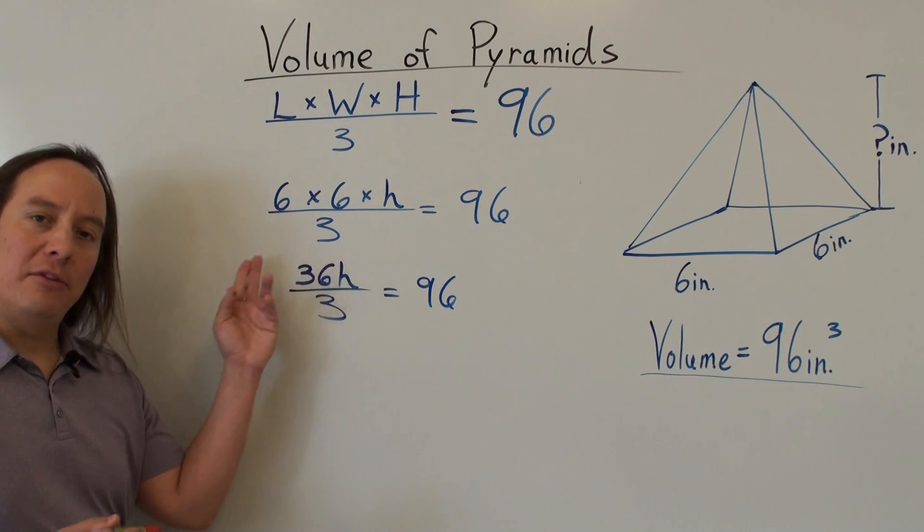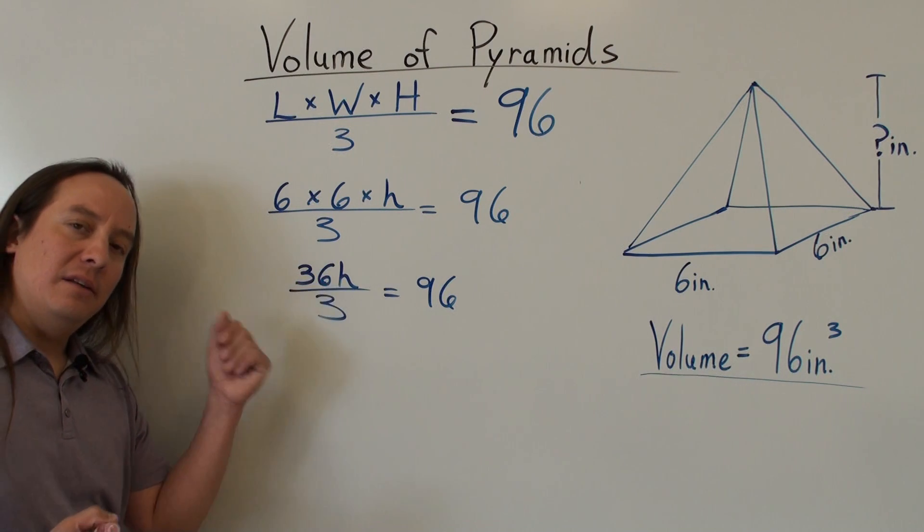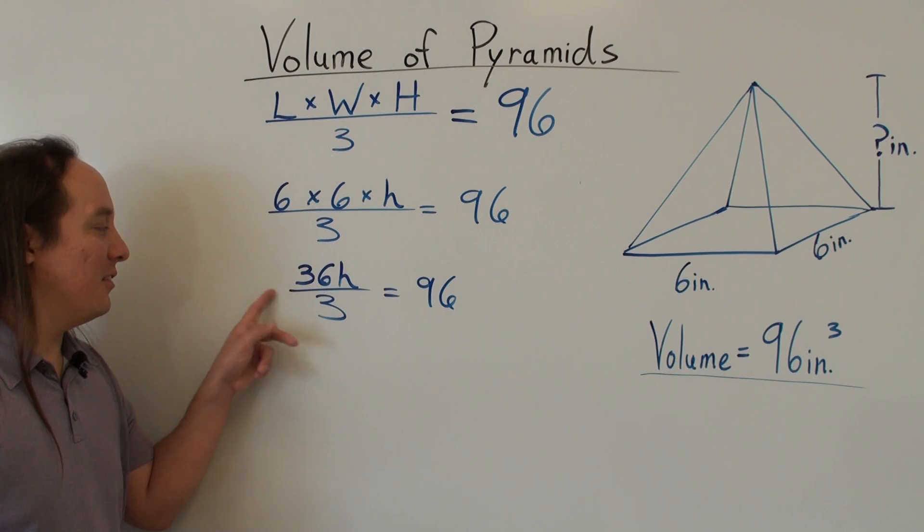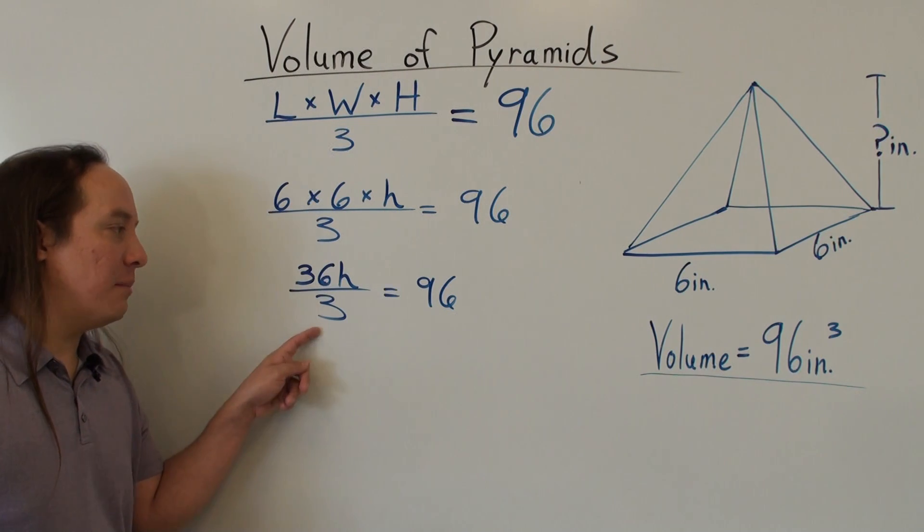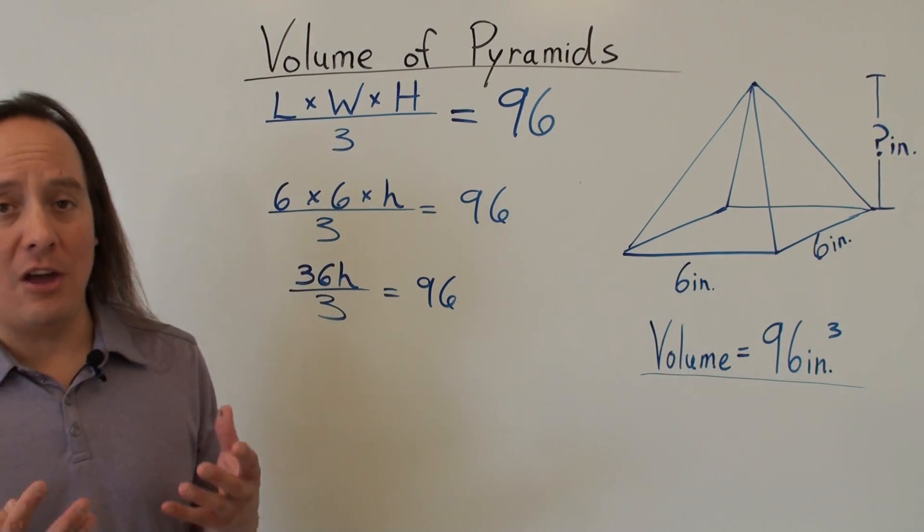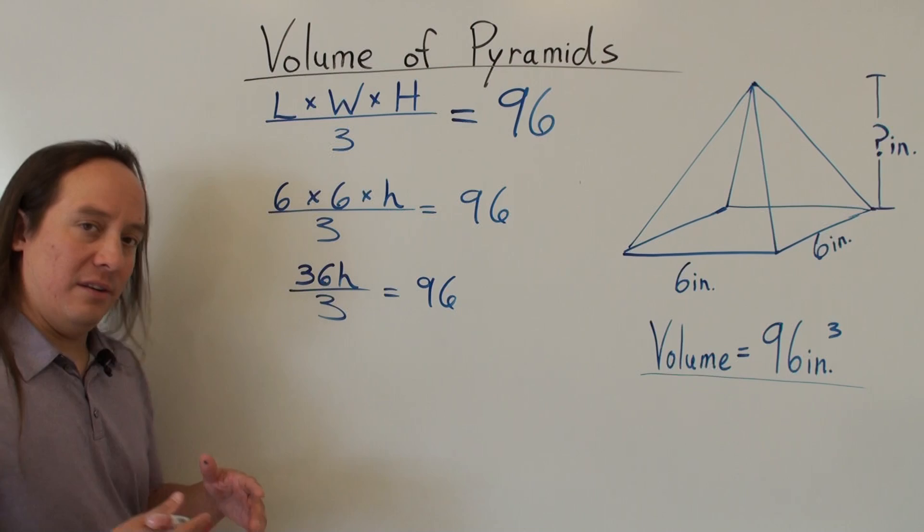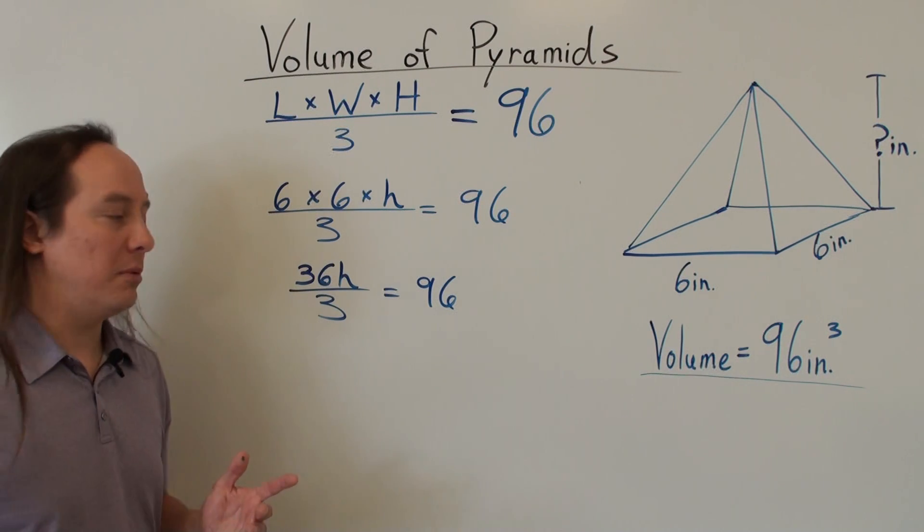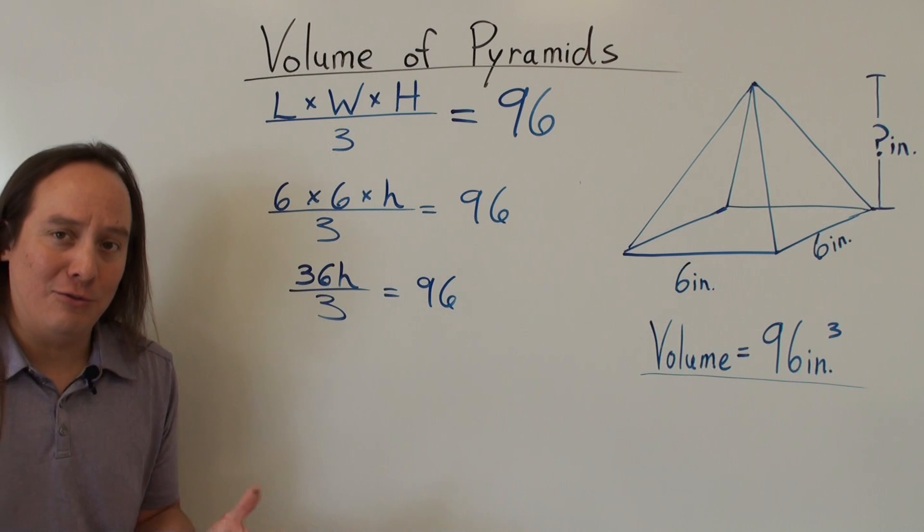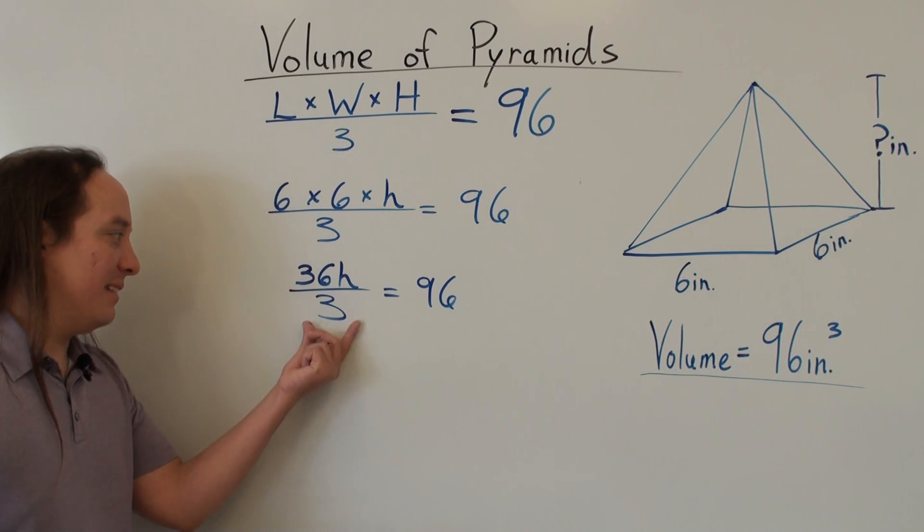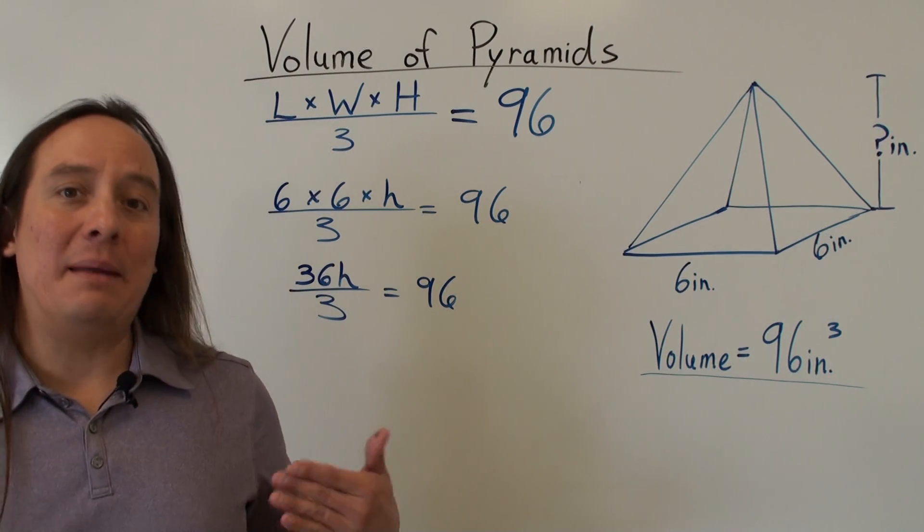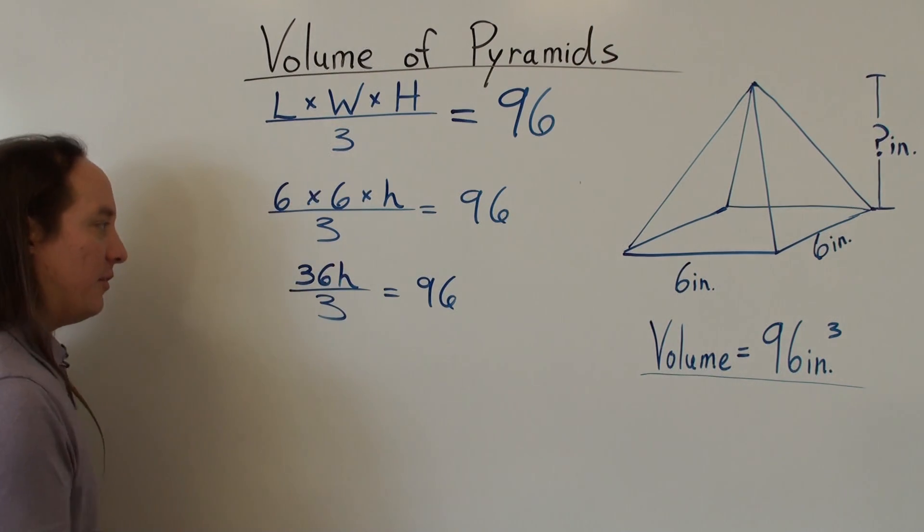So I have this term, this numerator, 36h divided by 3. Remember that fractions are divisions. That line is a division sign. So, 36h divided by 3. I want to undo that division. So to undo the division, I have to do the opposite operation, which is, opposite of division is multiplication. So what am I trying to get rid of? Like I said, the only thing I can actually affect is the 3. So I'm going to get rid of the 3. Instead of divided by 3, I'm going to do the opposite and multiply by 3. And just so you know, what you do to one side, you got to do the other.